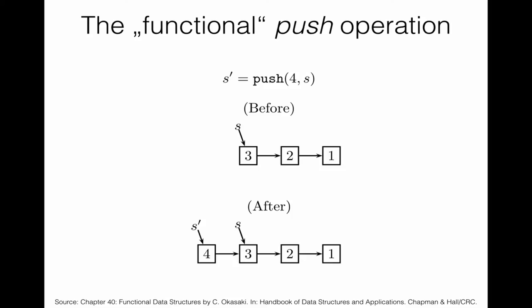The way we see that this is functional — persistent and immutable — is when we apply a push operation. Assume we have some stack with 3, 2, 1 in a stack S. When we apply a push operation, the pre-existing stack is not changed. We construct another stack and are able to reuse the previous stack, essentially layering an additional element on top.